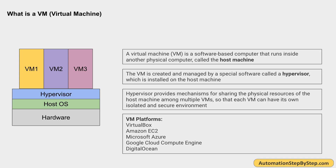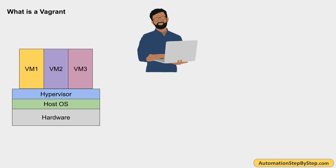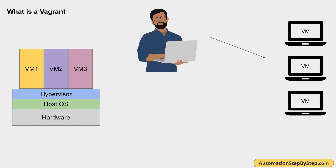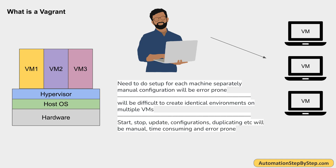Now let us understand what is Vagrant. Let's say you are working on a project and you are responsible for creating virtual machines — for setting up servers, development and testing environments, or performance testing environments. You have to create multiple virtual machines. If you want to do it manually, you will have to one by one set up and configure all these machines. It will be a completely manual process, take a lot of time, and will also be error prone. Creating identical environments like dev, testing, and production will also be a challenge. Starting machines, stopping machines, doing updates and configurations, or duplicating machines — all that will be manual, time consuming, and error prone.